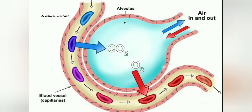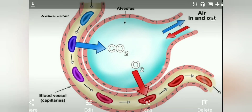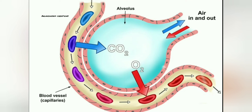You might wonder why carbon dioxide concentration is high in blood capillaries and oxygen concentration is low. During oxidation of food materials, some amount of oxygen is utilized in the body, which is why its concentration is lower in the blood. And carbon dioxide concentration is high because during oxidation of food materials, extra carbon dioxide is produced — so its concentration becomes high in blood capillaries.